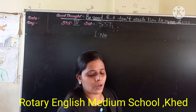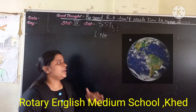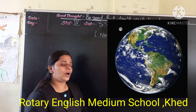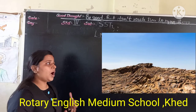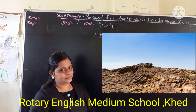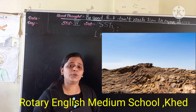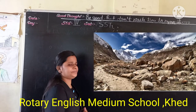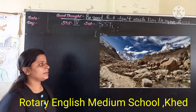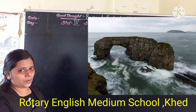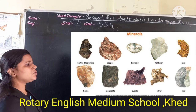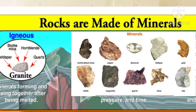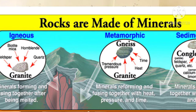Our earth is made up of soil and rock. Rocks are found everywhere. Can you tell where rocks are found? Rocks are found in the mountains, seas, and ground.